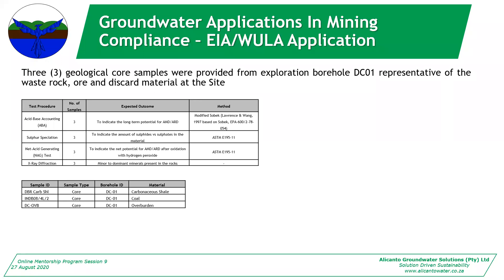For the geochemical assessment, three geological core samples were taken representing waste rock, ore material, and discard material, submitted to the lab for acid base accounting (to indicate long-term potential for acid mine drainage), sulfur speciation (to indicate the amount of sulfides versus sulfates), net acid generating tests (indicating net potential for AMD or ARD after oxidation with hydrogen peroxide), and X-ray diffraction to identify minerals present. The samples were carbonaceous shale directly above the coal, the coal material itself, and the overburden material. This same approach applies to any mining environment — gold, platinum, copper — you always have these three broad categories of material to test and consider for contamination.